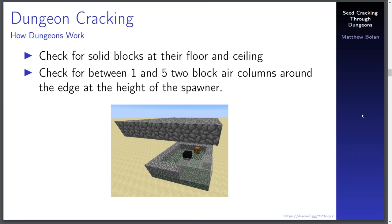Dungeons need some special conditions to spawn — it's not like the game actually places eight dungeons per chunk. Dungeons have a check at their ceiling for a ceiling made completely out of solid blocks the dungeons can replace, and the same check at the floor. Because the developers didn't want dungeons generating deep underground where you'd never find them, dungeons also have a check for between one and five air blocks on the edge of the dungeon at the height of the spawner. So dungeons can only really be placed at the side of caves — there's always at least some level of opening into a cave.